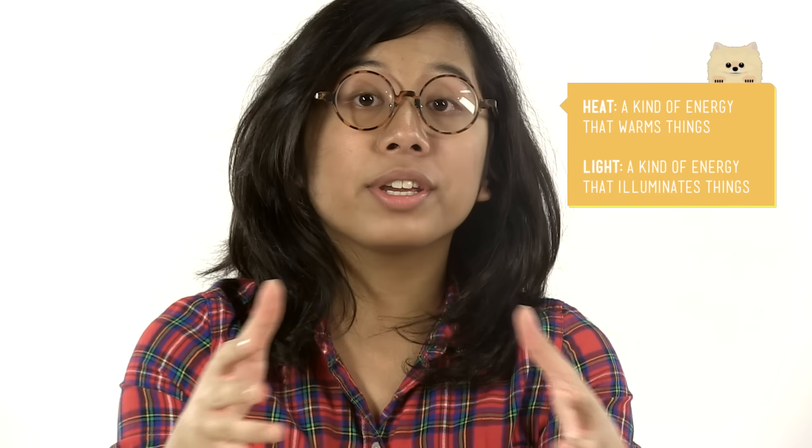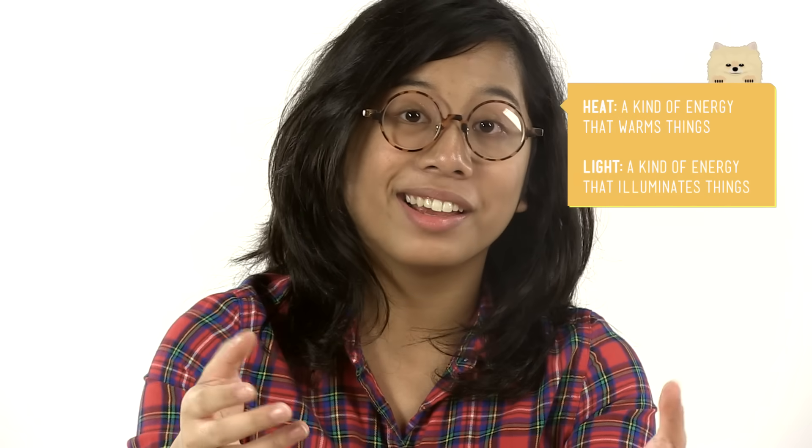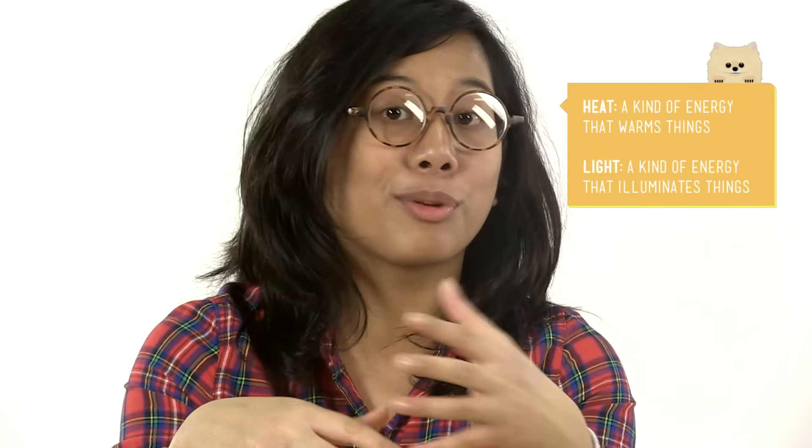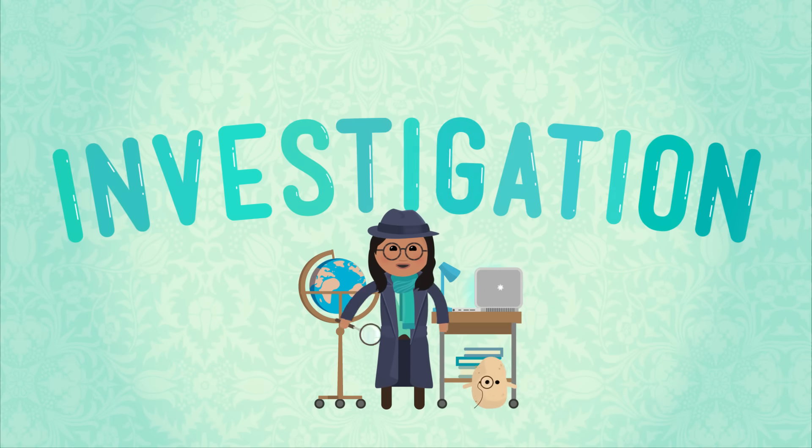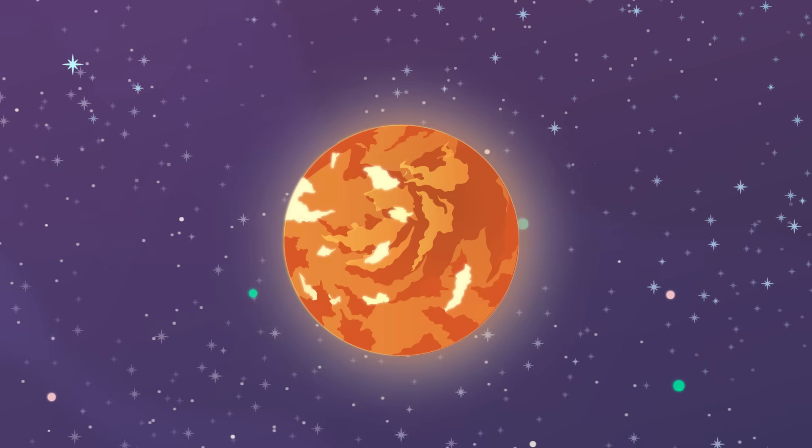So you know that the Sun is hot and bright, and that heat and light are both kinds of energy that we get from the Sun. Let's take a look at a model to see how the Sun's energy gets from good old Sol to our planet. Here's the Sun.